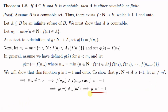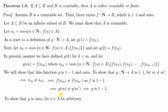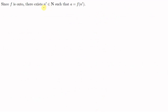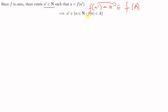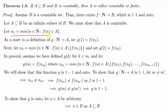Now we shall show that g is onto. To show that g is onto, let a be any element of A. Since A is contained in B, we get that this a is an element of B. Now we know that B is countable, so we have this function f from N to B which is one-to-one and onto. Since f is onto, there exists an element n' in N such that f(n') equals a. So f(n') equals a means f(n') is an element of A. Now this means that n' is an element of the set of all n such that f(n) is an element of A.